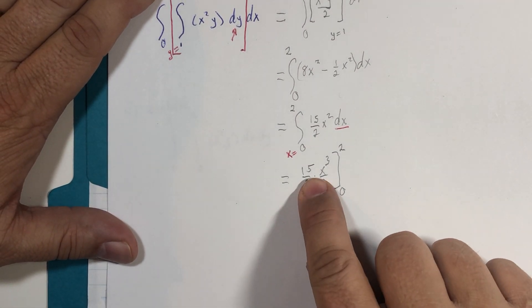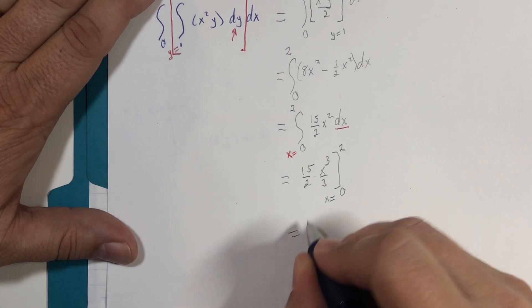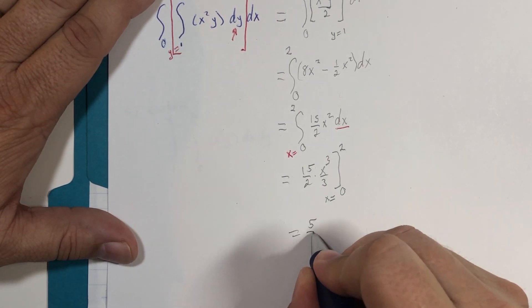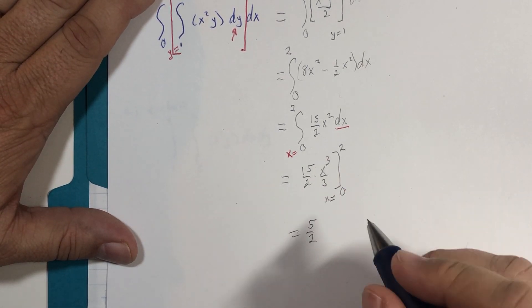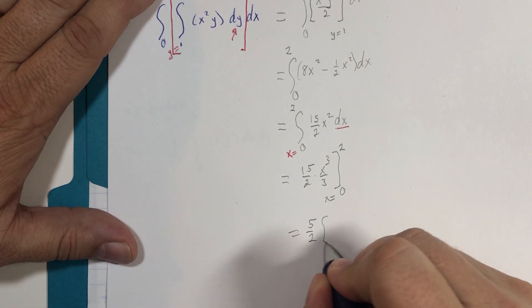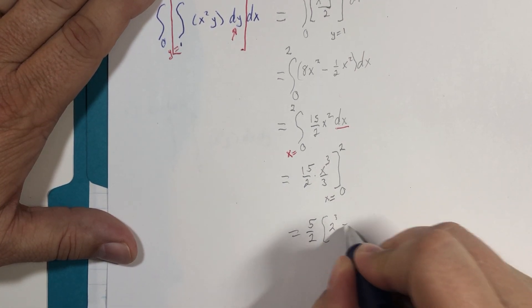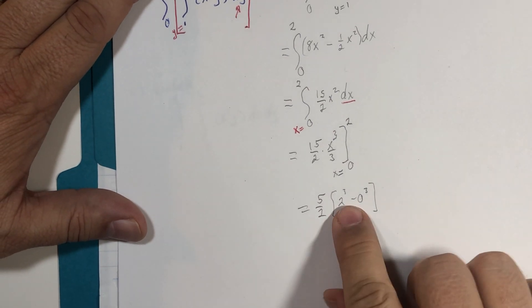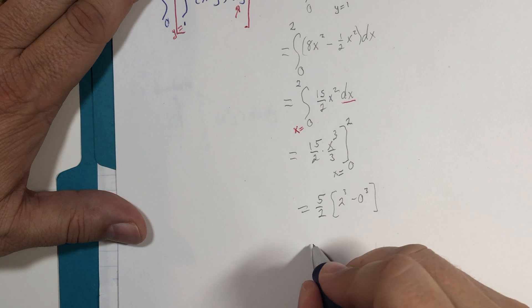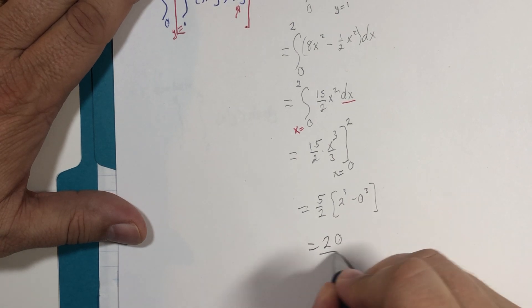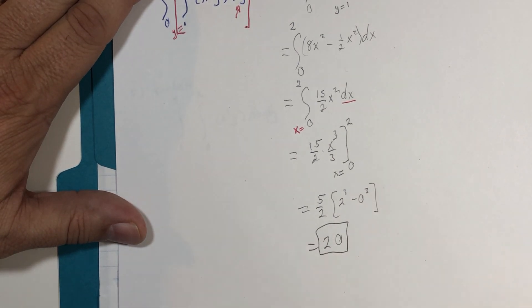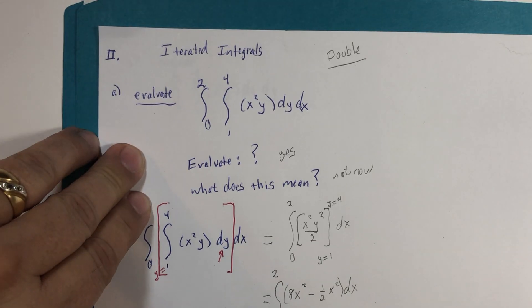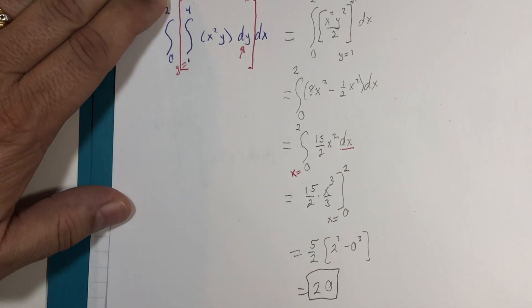Three goes into 15 five times. We get five over two, and we get two to the third minus zero to the third, ultimately leaving us with eight over two is four, four times five is 20. Again, what does it mean? Not now. We're just doing a calculation.